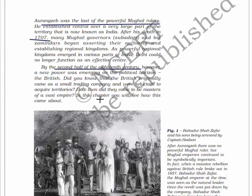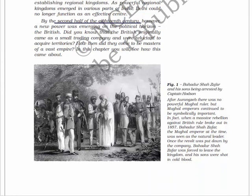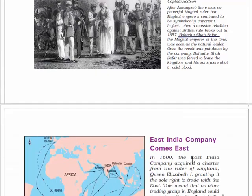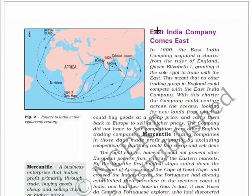This chapter will explain how this came about. Here is the image of Bahadur Shah Zafar and his sons being arrested by Captain Hudson. After Aurangzeb, there was no powerful Mughal ruler, but Mughal emperors continued to be symbolically important. When a massive rebellion against British rule broke out in 1857, Bahadur Shah Zafar was seen as a natural leader. Once the revolt was put down, he was forced to leave the kingdom and his sons were shot in cold blood.